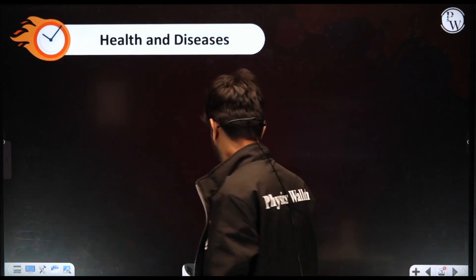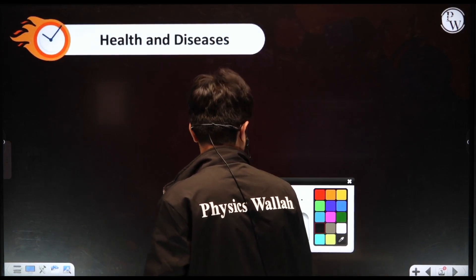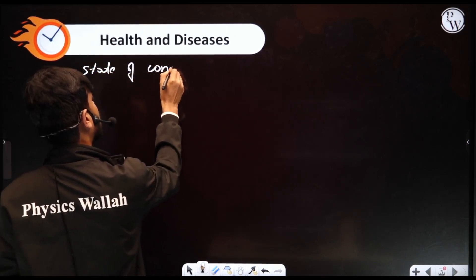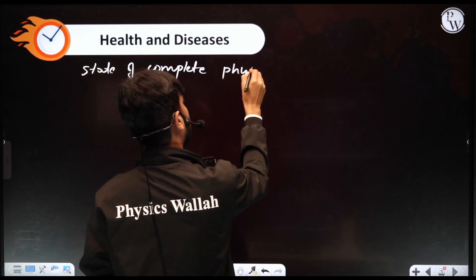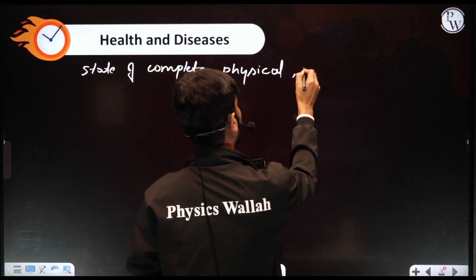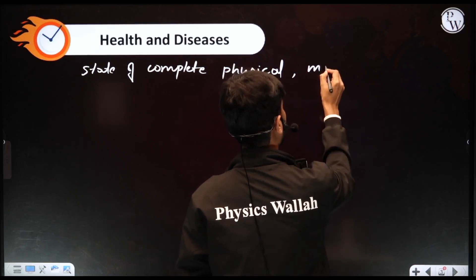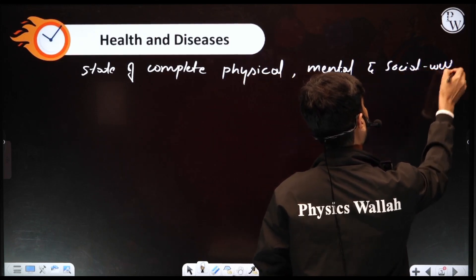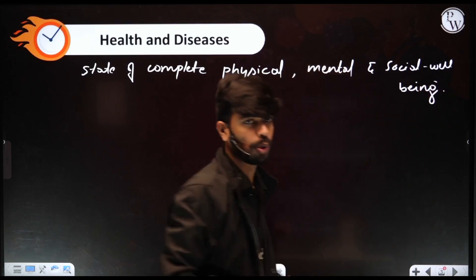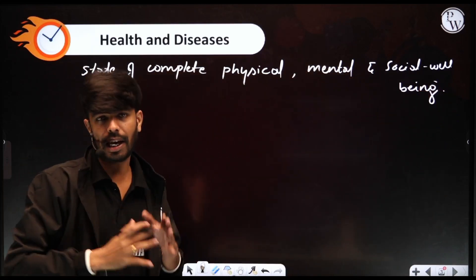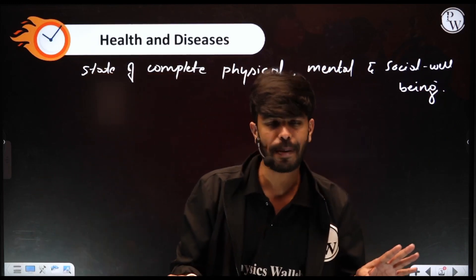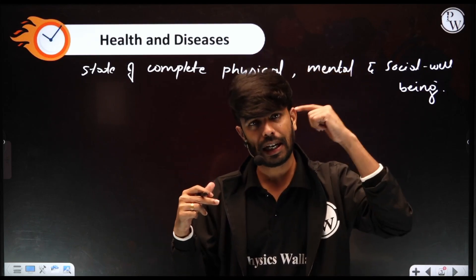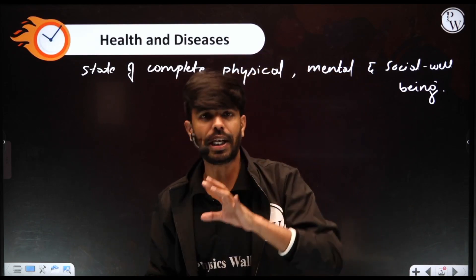The first concept is health and disease. Health, in the sense, is a state of complete physical, mental, and social well-being. We need to be physically fit — that doesn't mean we must have six packs — it means we should have no disease. Physically, physiologically, mentally, psychologically, and socially we should be well.